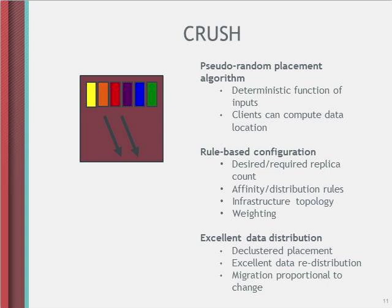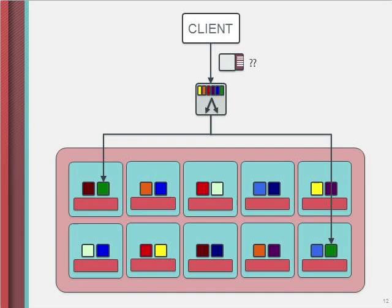The picture is: you've got some client who wants to use a whole bunch of objects. The client computes where the object is and can go talk directly to either copy of the object — there's no intermediate database or metadata server he has to contact to find out where the data resides.